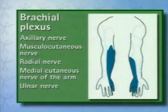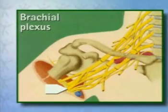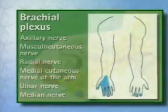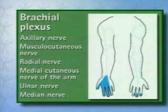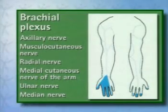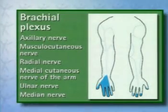The median nerve runs under the biceps to the cubital fossa. On a sensory basis, it supplies a part of the palm of the hand and the fingers. It also innervates a major portion of the flexors of the lower arm and the hand.